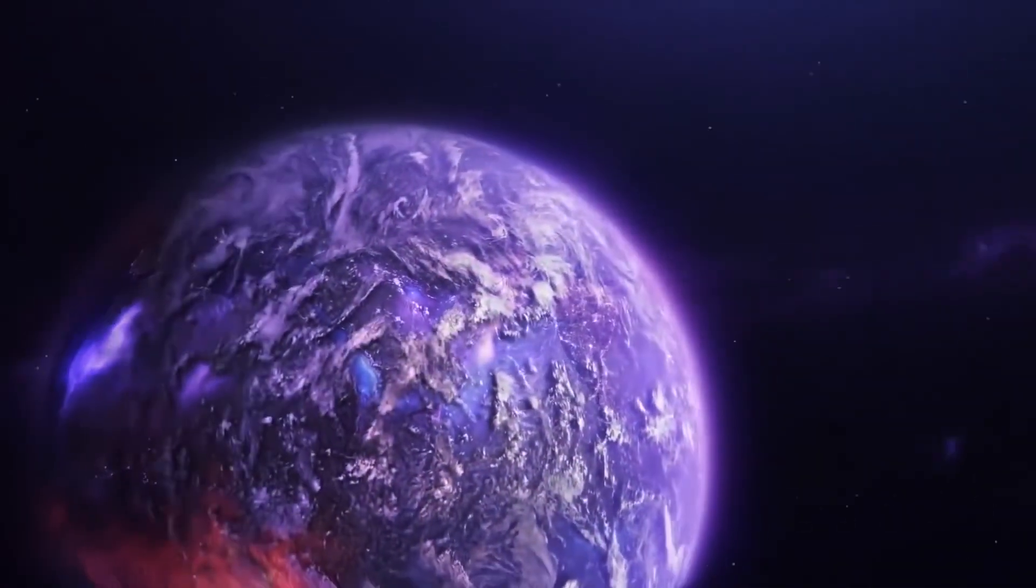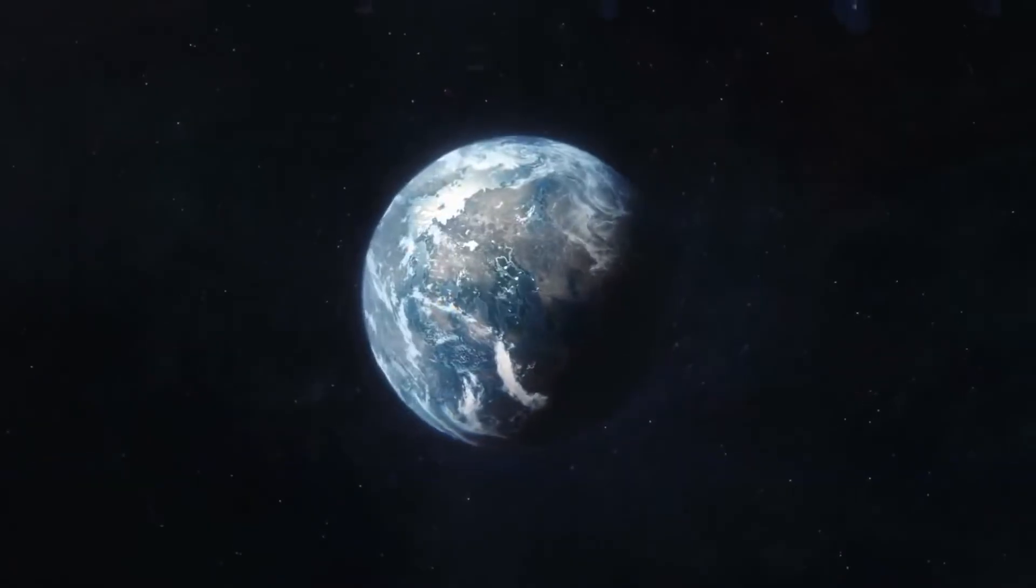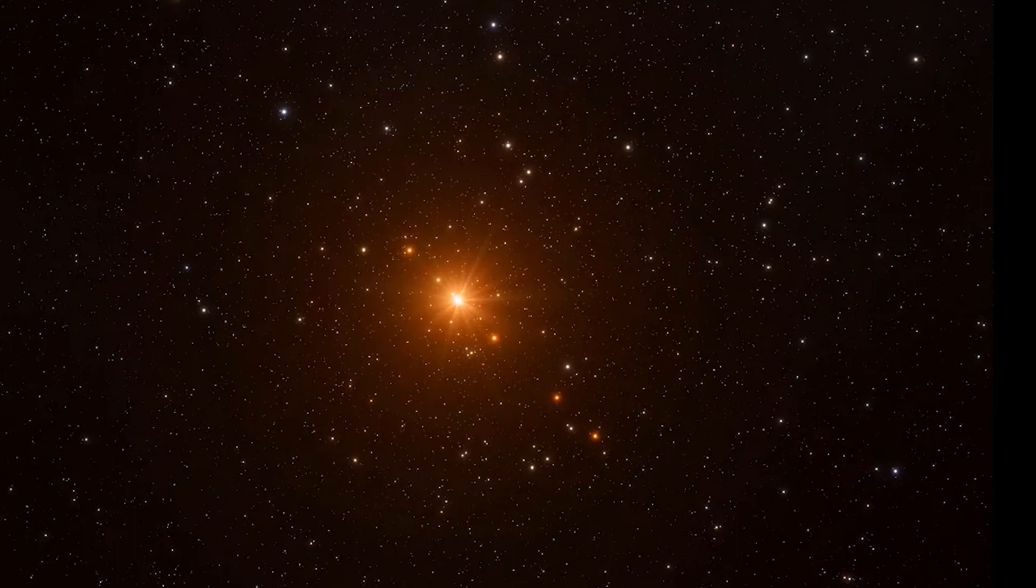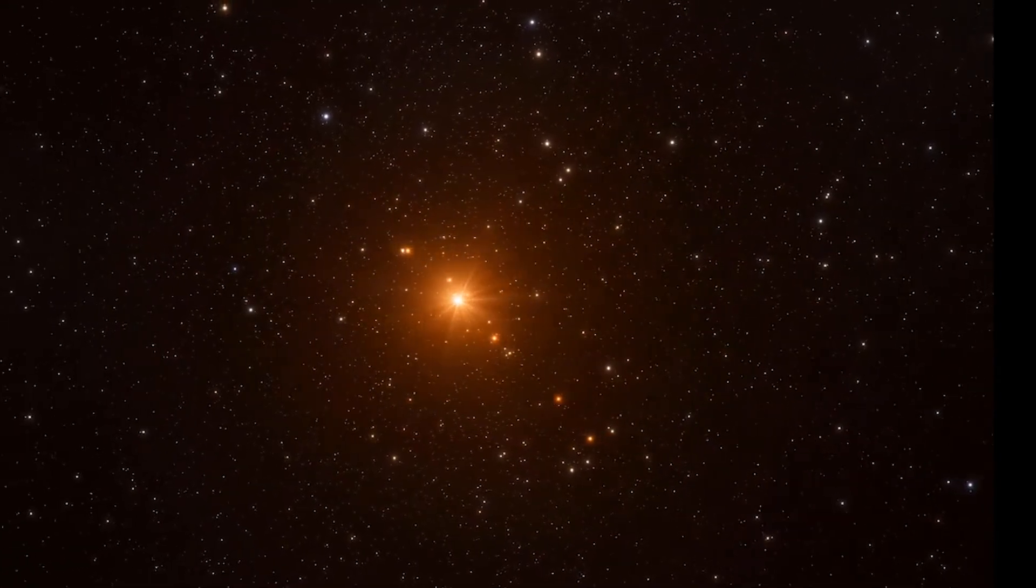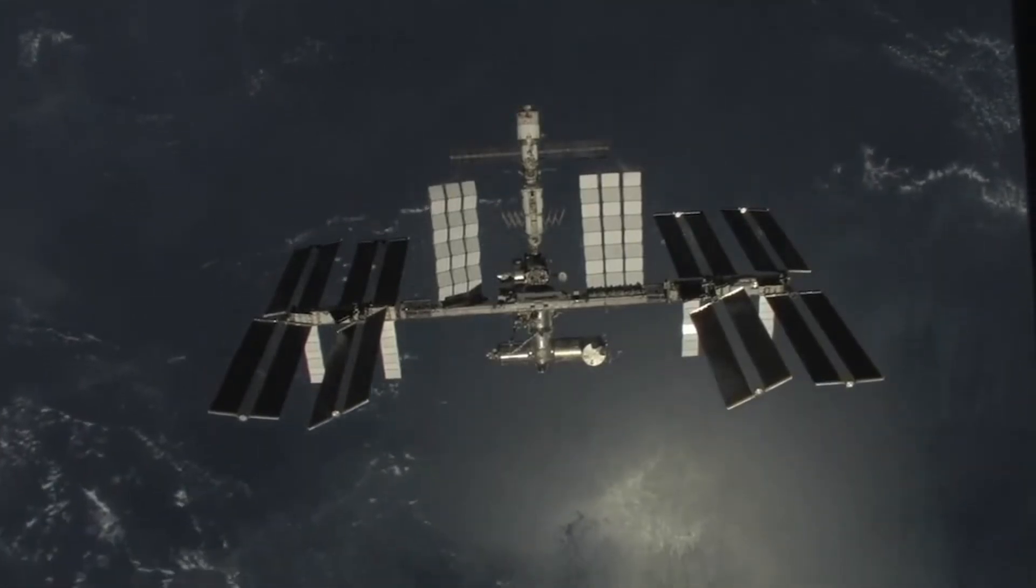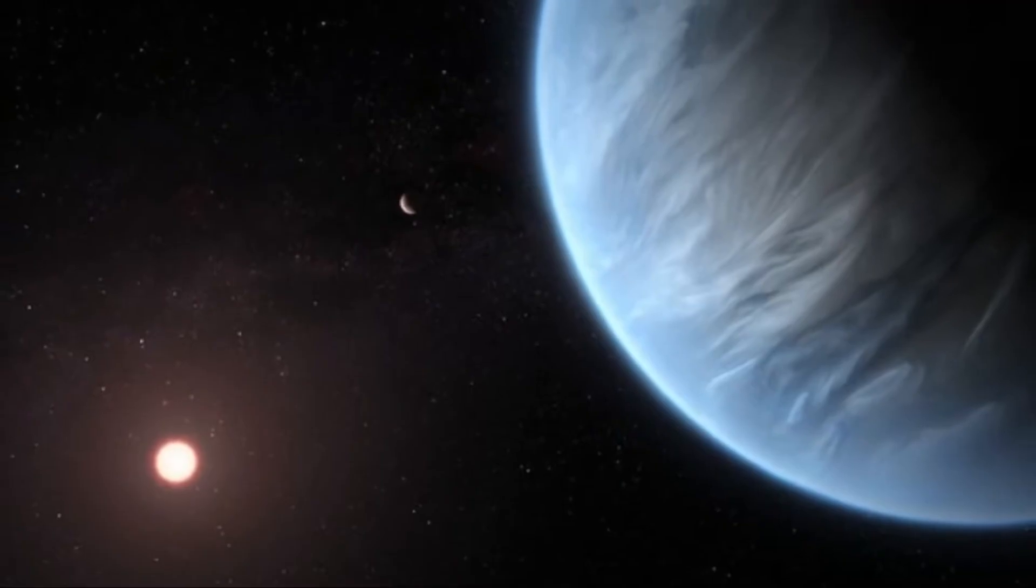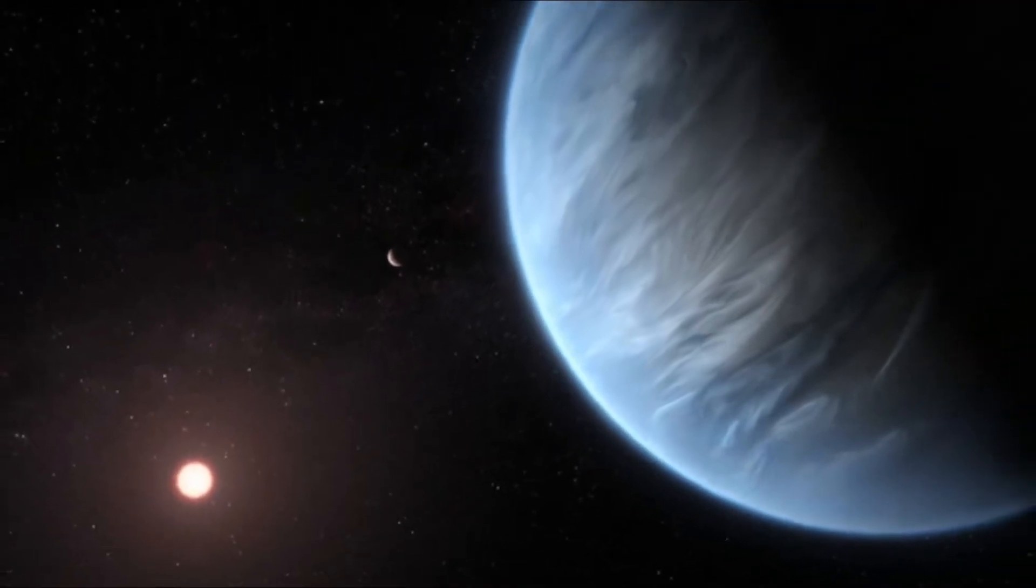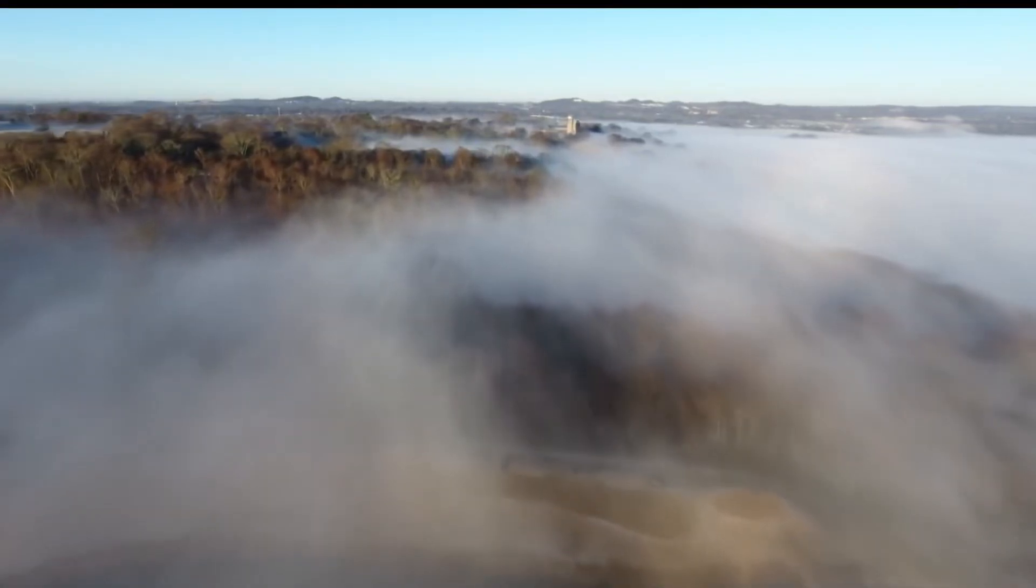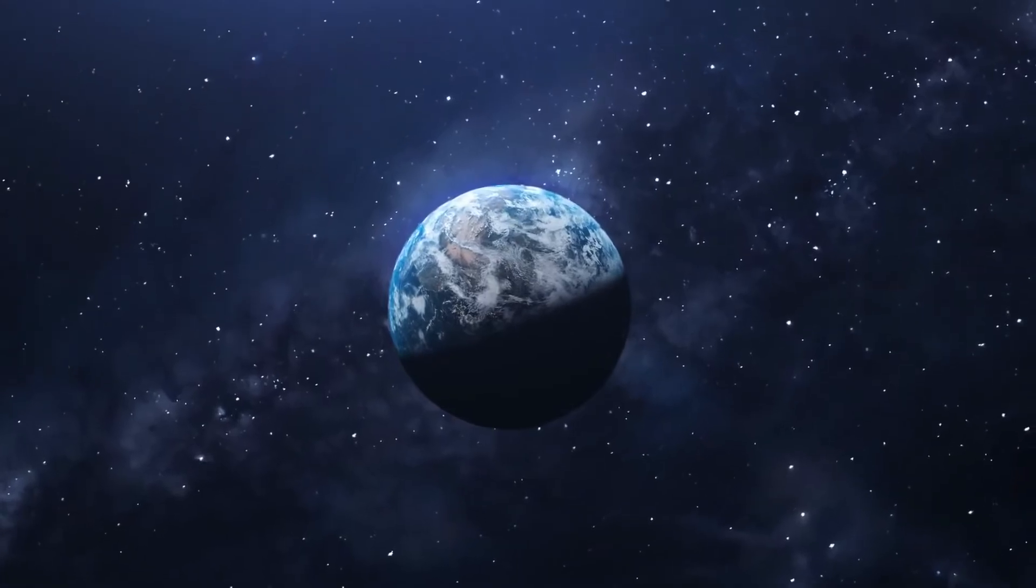Number six, Kepler-442B. NASA explained this exoplanet is 33% bigger than Earth and revolves around its star every 112 days. 2015 saw the announcement of the discovery of Kepler-442, a star 1,194 light-years from Earth. One study discovered that this exoplanet might receive enough light to support a substantial biosphere, which was published in the monthly notices of the Royal Astronomical Society in 2021.